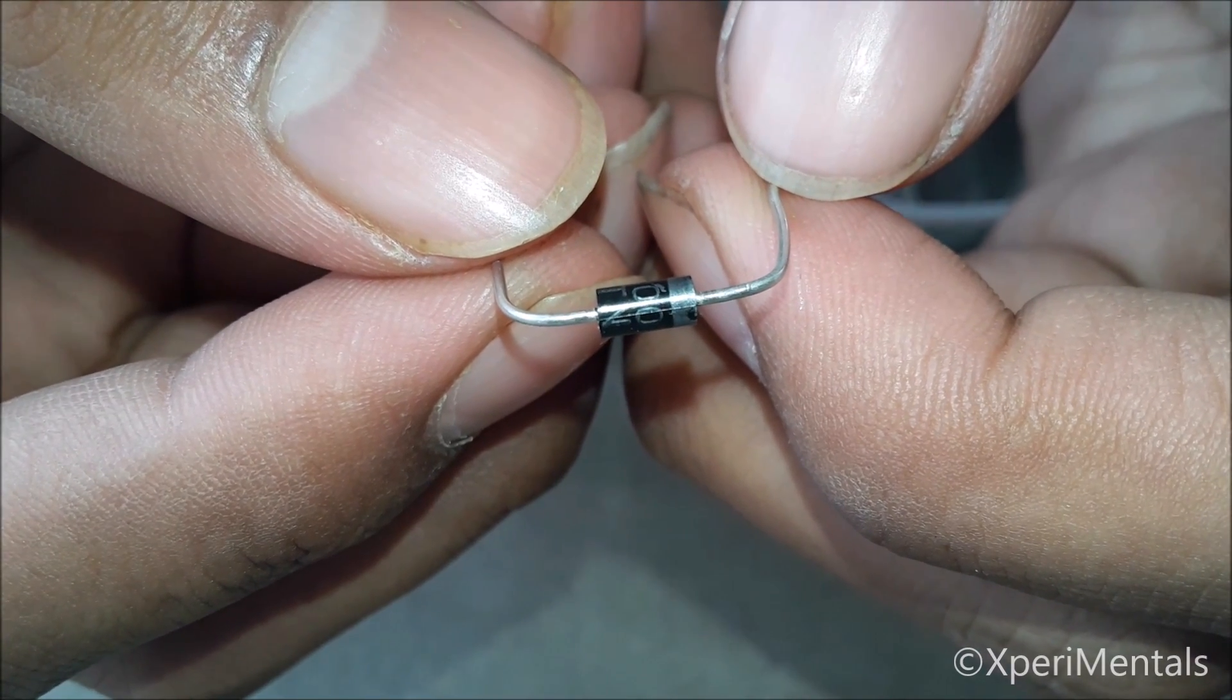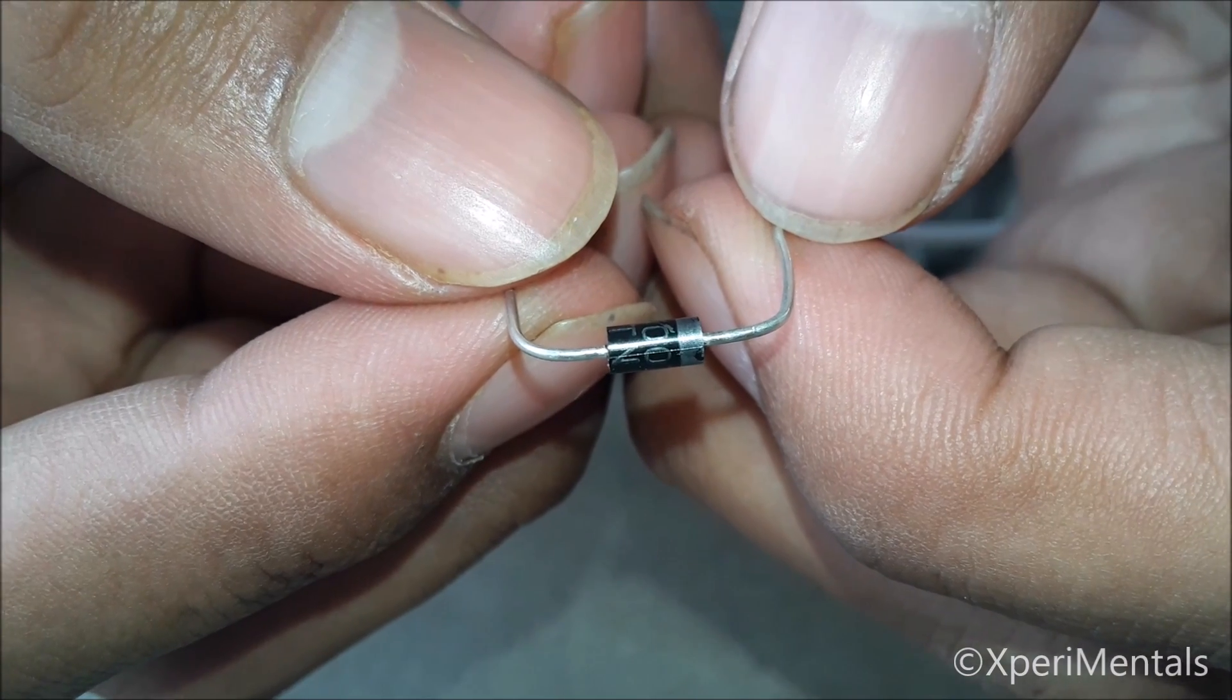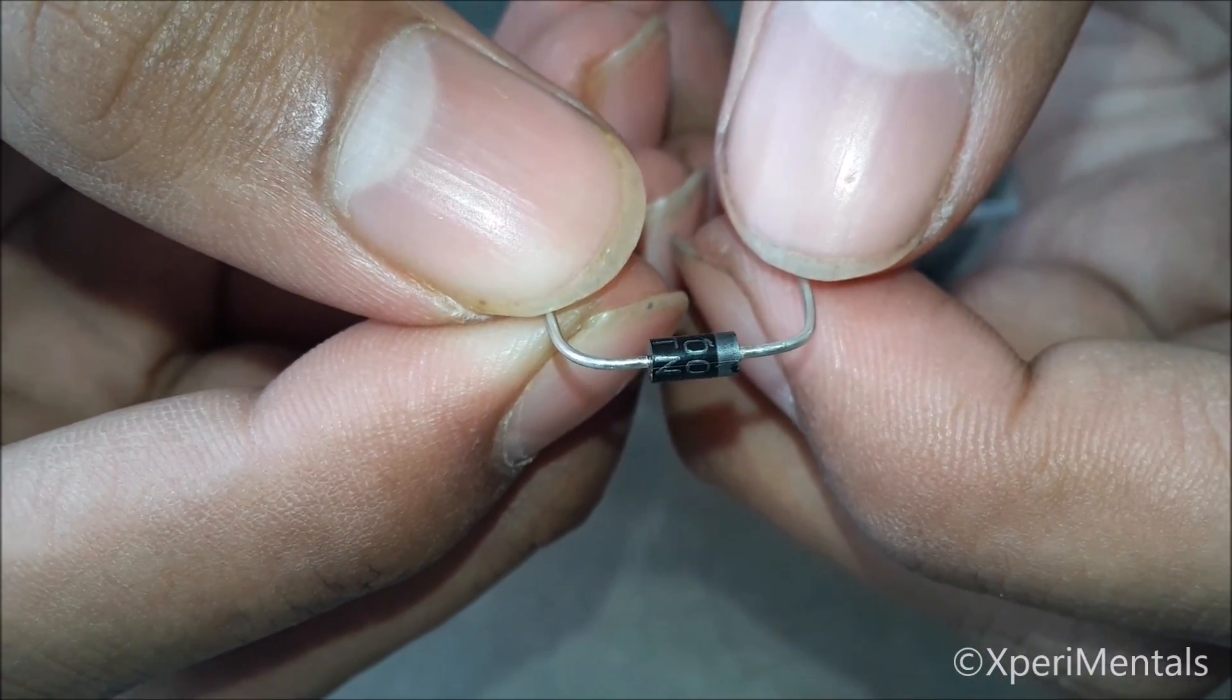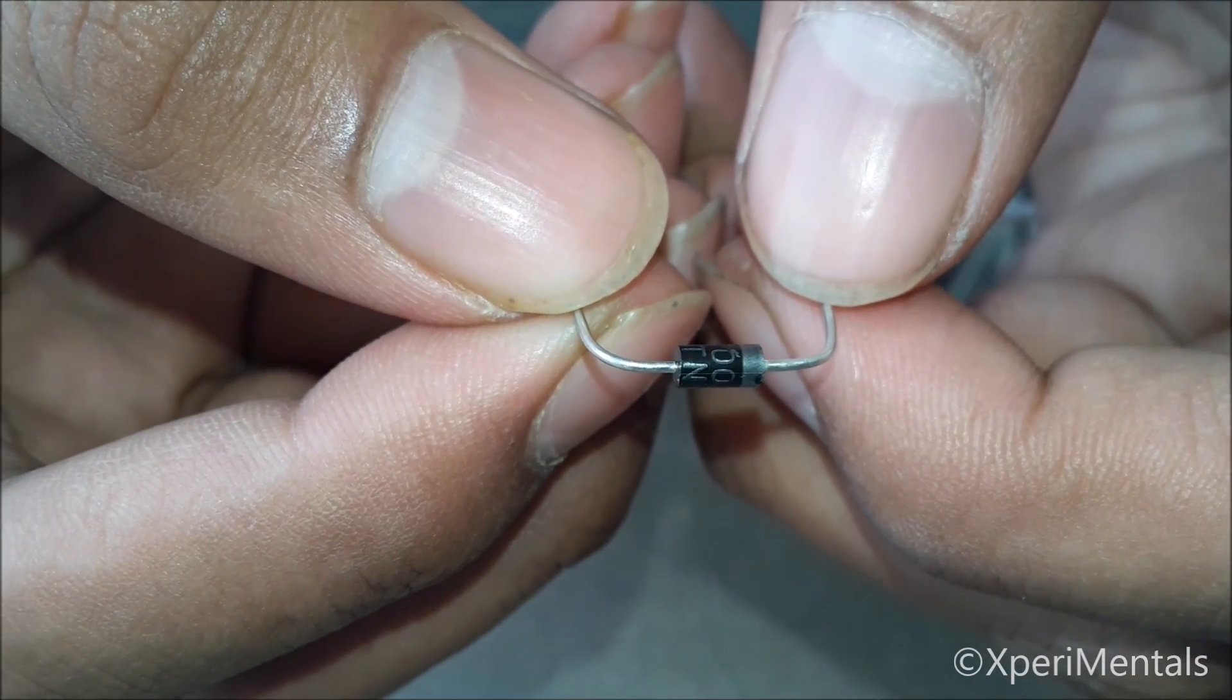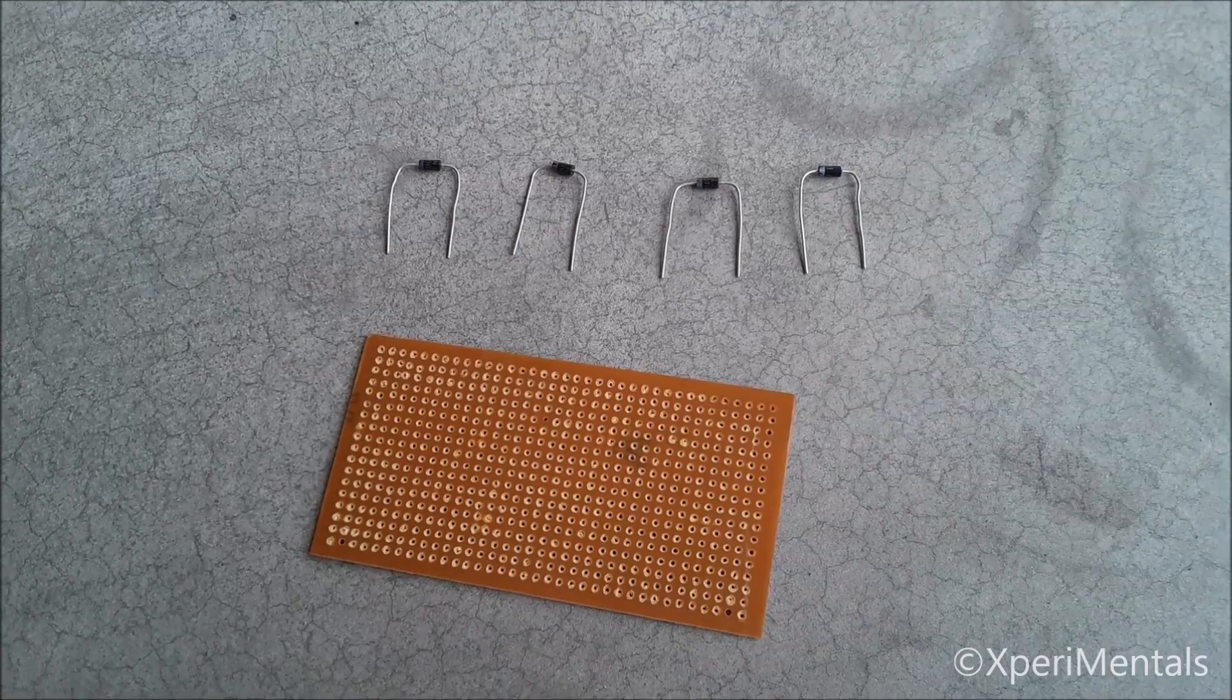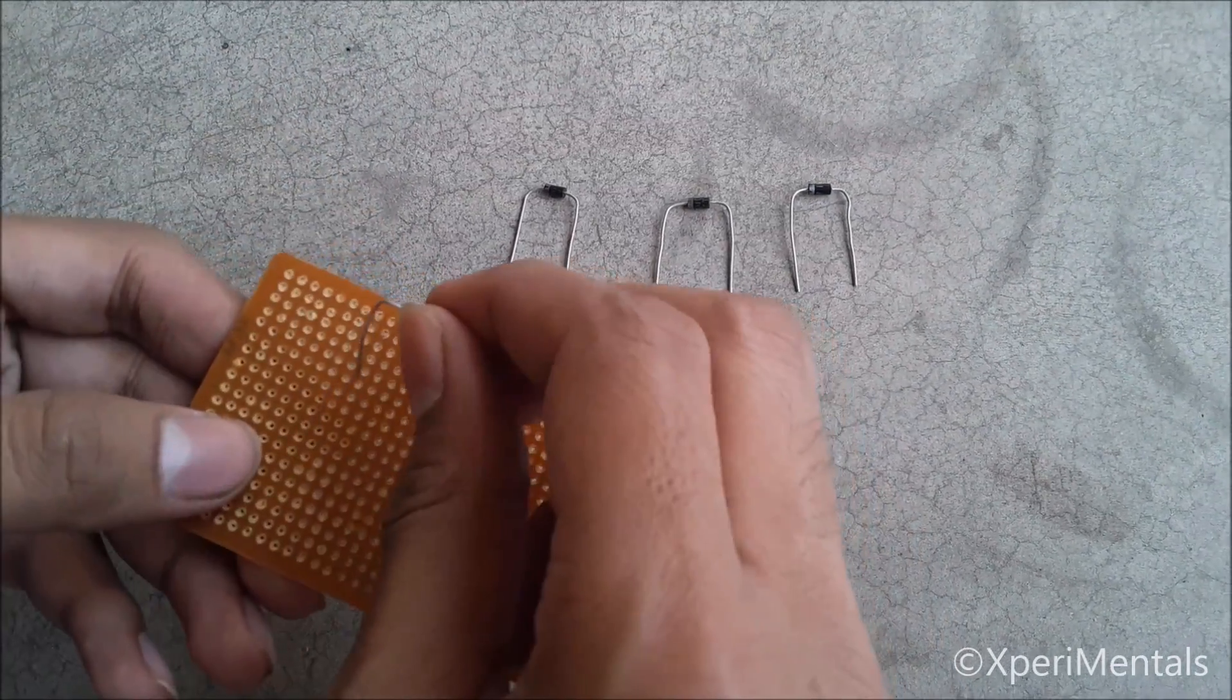On the right-hand side of the diode you can see a silver band. This is the negative pinout, the N part of the diode. On the left-hand side is the P part of the diode. First, take the four diodes and solder them as shown in the circuit diagram.